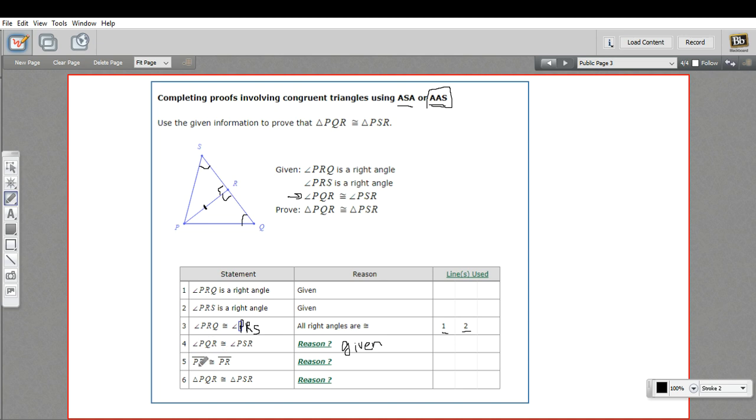The next step, they've said that segment PR is congruent to segment PR, this guy right here. We say that because it's a side in both these triangles and we need to explicitly state that that side is congruent. But you're saying something is congruent or equal to itself. That is the reflexive property.